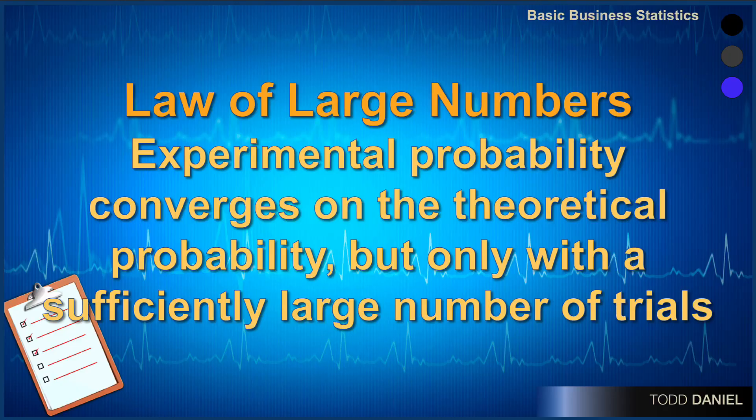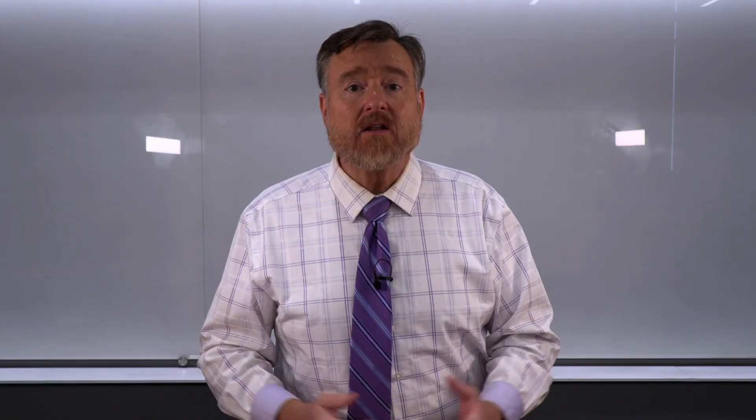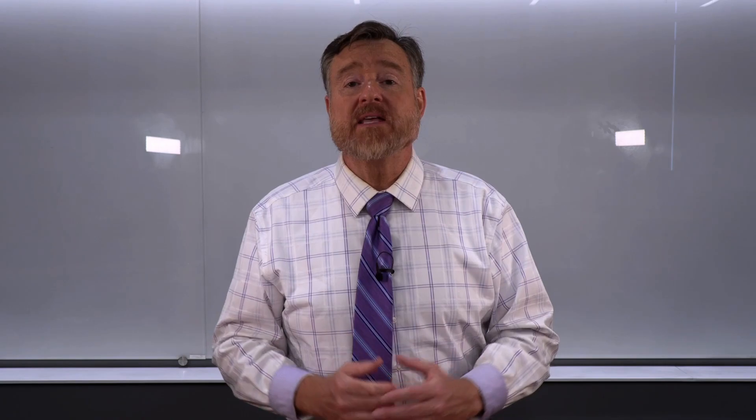The law of large numbers tells us that experimental probabilities converge on theoretical probabilities, but only with a sufficiently large number of trials. Roll the dice enough times and eventually you'll get something that looks very close to the theoretical probability distribution, but it will take a very long time to get there. That law of large numbers is something we will visit again with the gambler's fallacy.